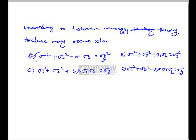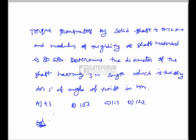Torque transmitted by a solid shaft is 5172 Nm and the modulus of rigidity of the shaft material is 80 GPa. Determine the diameter of the shaft having 3 m length for 1 degree of angle of twist, in mm. The options are 93, 107, 103, 113, and 123.